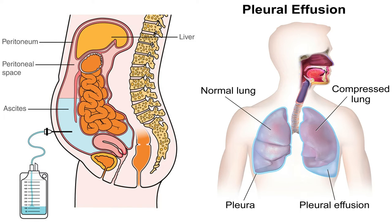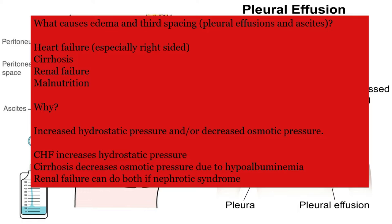Fluid entering the interstitial spaces will find any place it can. Third spacing of fluid means it goes to the spaces between the parietal and visceral pleura and peritoneum. If the pleura, then pleural effusions. If the peritoneum, then ascites. The take-home message: what causes edema and third spacing - pleural effusions and ascites - is heart failure especially right-sided, cirrhosis, renal failure, and malnutrition. Why? Increased hydrostatic pressure and/or decreased osmotic pressure. CHF increases hydrostatic pressure, cirrhosis decreases osmotic pressure due to hypoalbuminemia, and renal failure can do both if nephrotic syndrome.